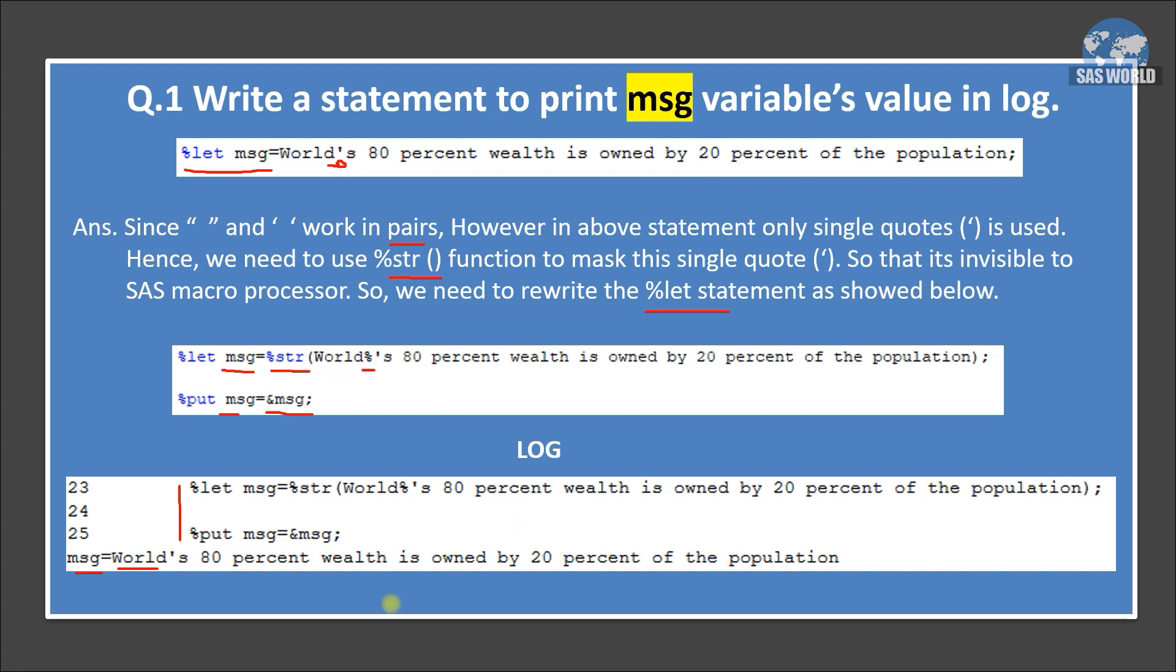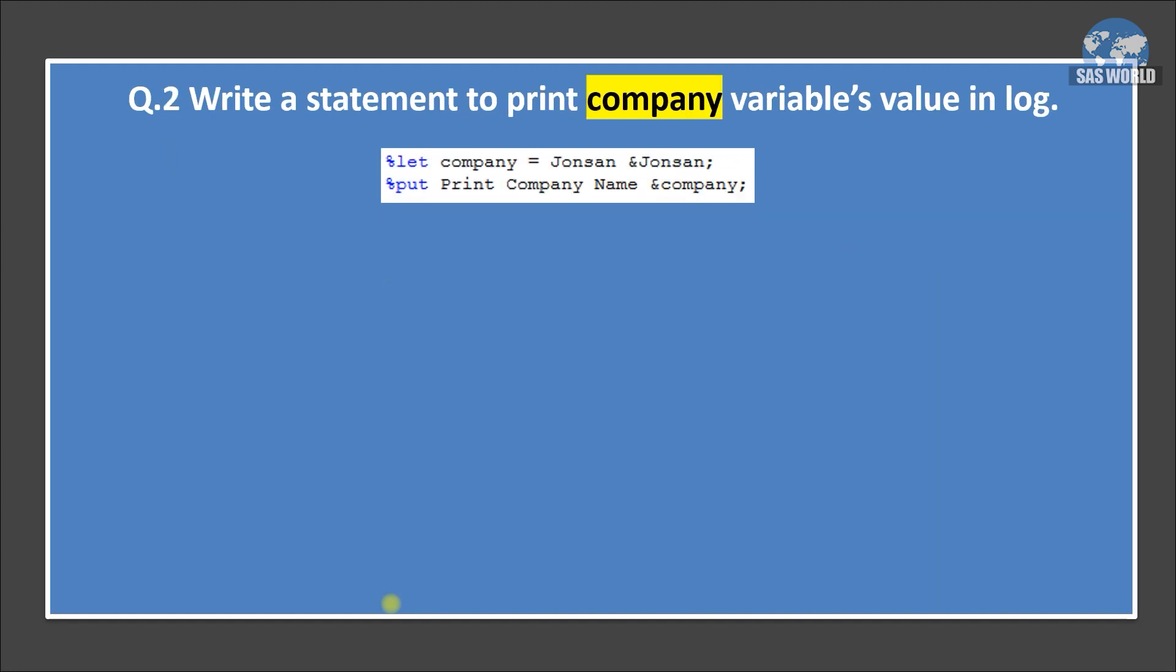So if I talk about mnemonics, mnemonics are like when we use gt, gt for greater than, lt for less than. So these operators are called mnemonic operators. Let's move on to the next slide. Okay. So we have another question. Write a statement to print company macro variable's value in log.